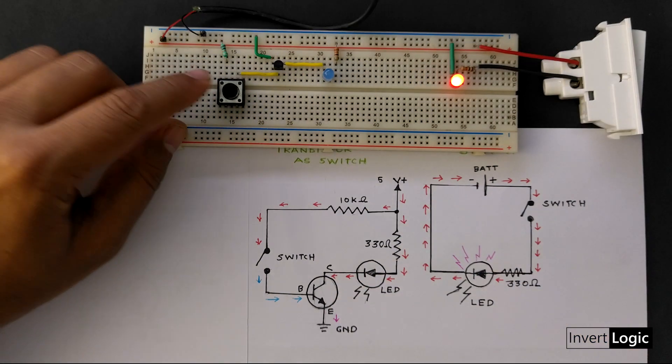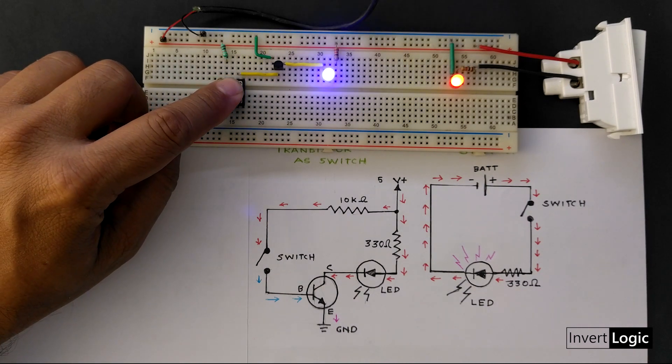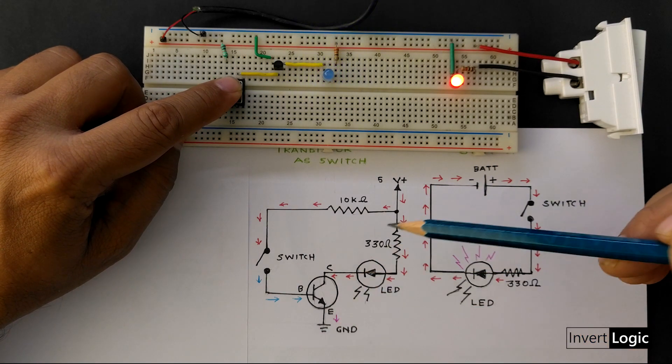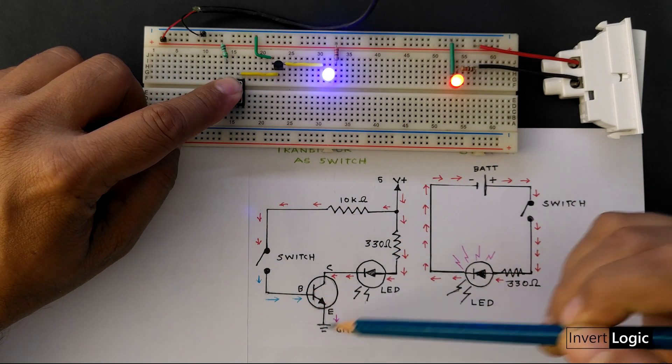When we press this switch, it sends small amount of current to the base. Then the transistor turns on and the LED glows as the collector connects with the emitter and circuit completes. This is working exactly like our hard switch example.